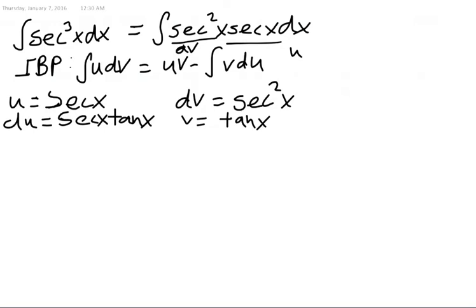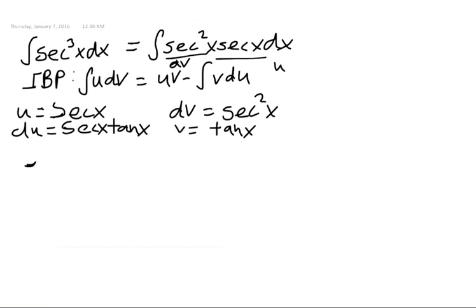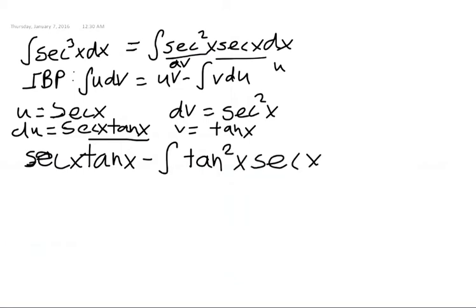So applying the integration by parts formula, we're going to have the right hand side is uv minus the integral of v du. So u times v is secant x tangent x minus the integral of v, which is tangent, times du. And notice in our du, we have another tangent factor right there, so I'm just going to write a 2 there for tangent squared.